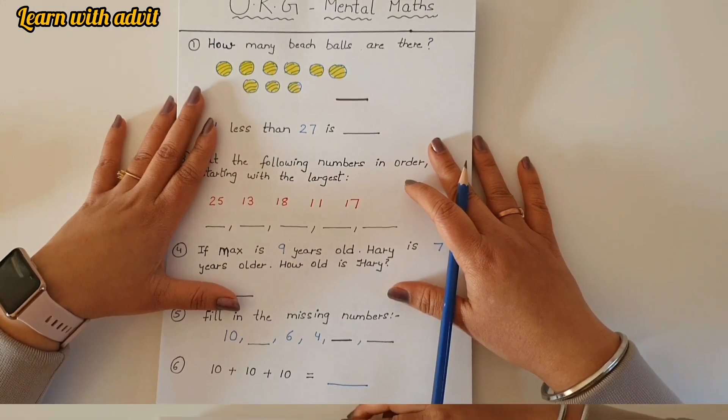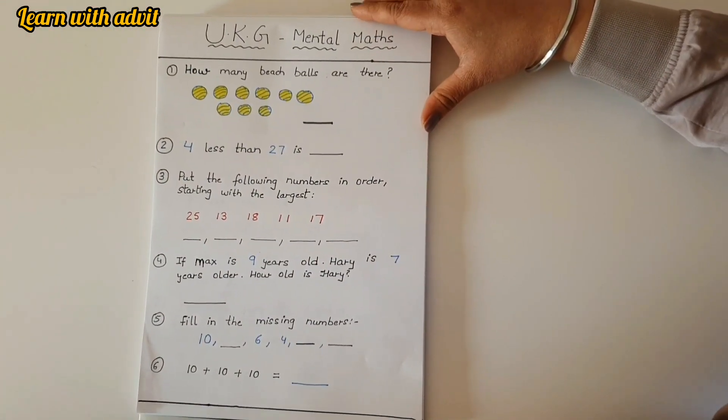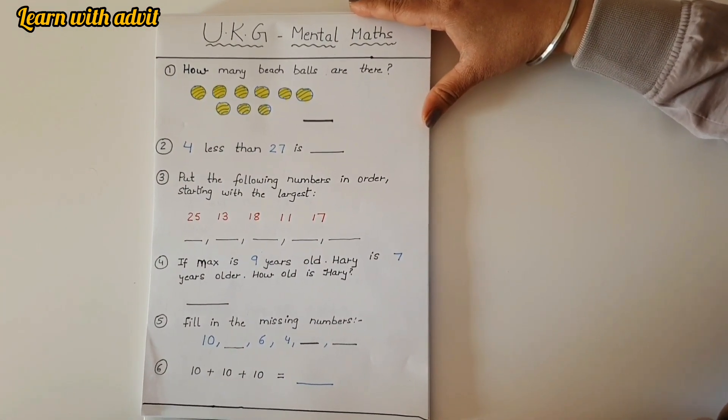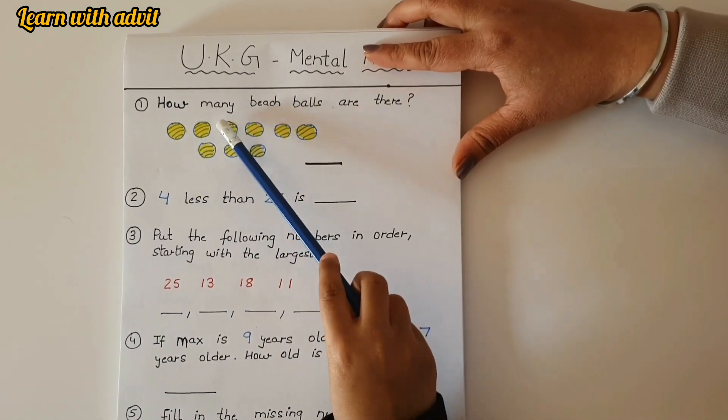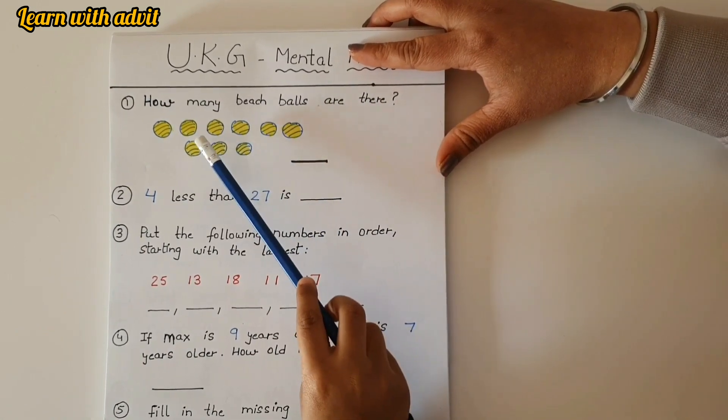So this is the mental maths worksheet. Are you ready Advit? Yes. How many beach balls are there? Come on, count and write. It's quick math. One, two, three, four, five, six, seven, eight, nine. Four less than 27 is 23. Very good.